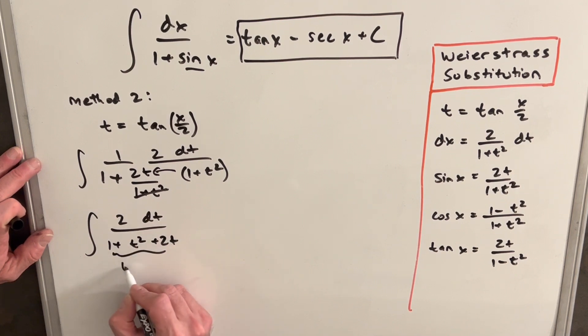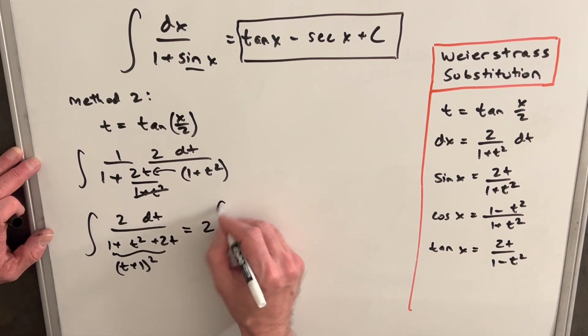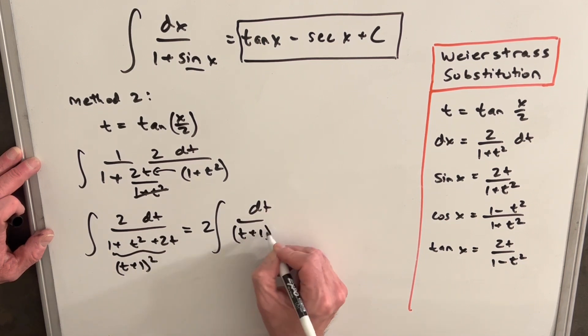But notice this here is actually just t plus one squared. So when I rewrite this, we'll pull out the two, we'll have our dt over t plus one, all squared.